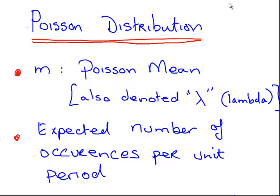In this presentation we're going to look at the Poisson distribution and the formula. This is very much an introductory type of talk. First off, we're going to talk about the important parameter, the Poisson mean. We are going to denote it M, partly because it's easier when you're handwriting it rather than printing it.